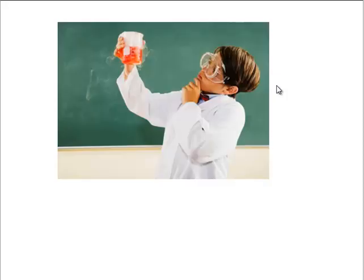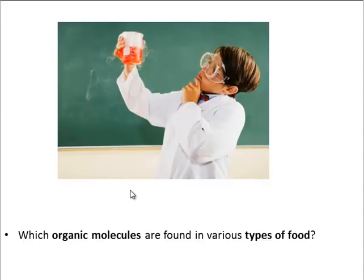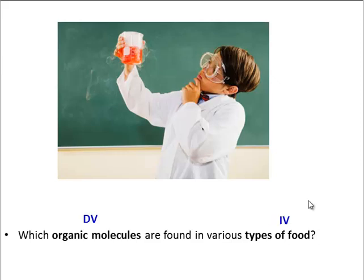Make sure you've got the problem down in your notebook: we are investigating which organic molecules are found in various types of food. Since organic molecules are what we are measuring, this is our dependent variable. And since we're changing the types of food, that's going to be our independent variable.